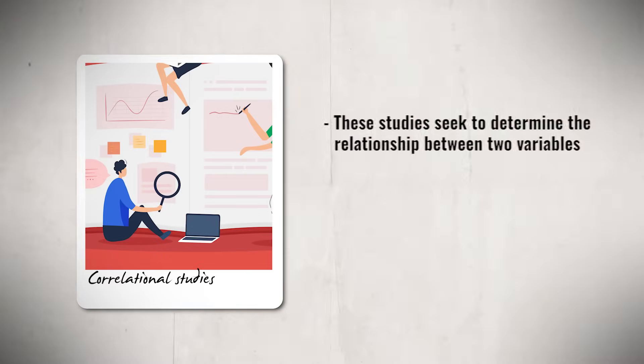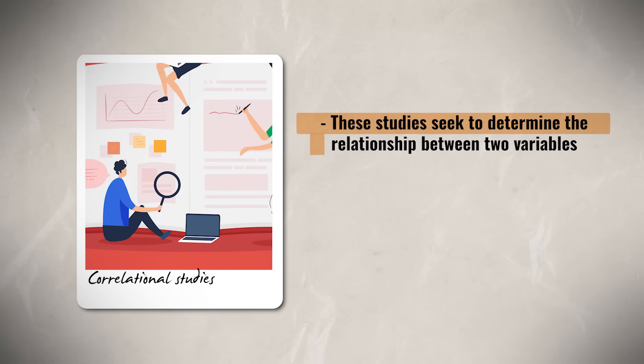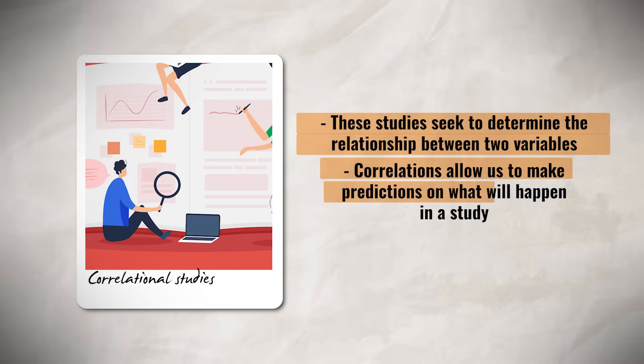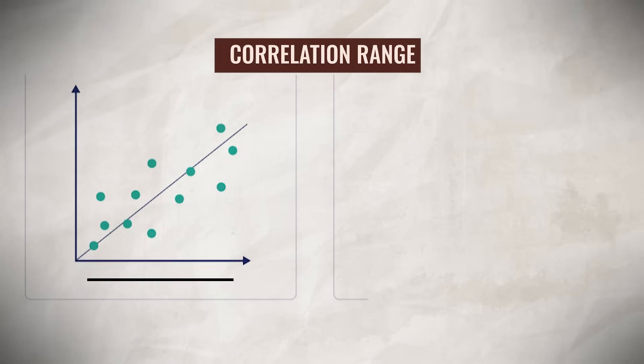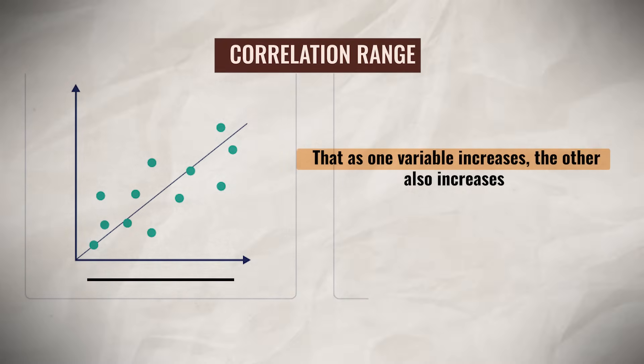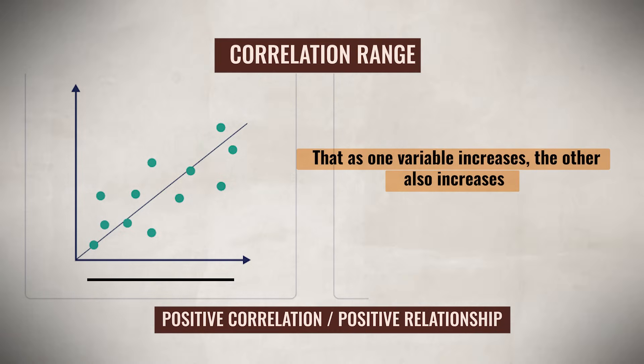And just like that, we made it to our last topic, which is coefficients. And when talking about coefficients, we also have to talk about correlational studies, which remember these studies seek to determine the relationship between two variables. Correlations allow us to make predictions on what might happen in a study. But again, remember, correlation does not mean causation. Now, a coefficient between zero and one indicates that as one variable increases, the other also increases. This is known as a positive correlation or positive relationship, which when plotted on a scatter plot would appear as an upward trend.